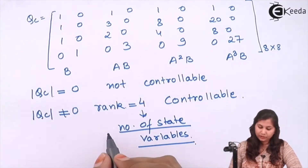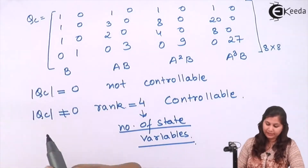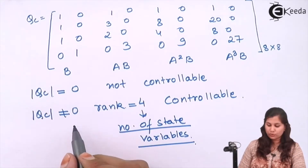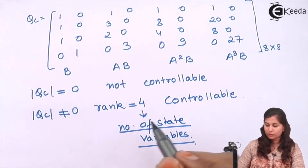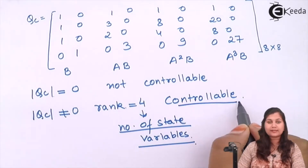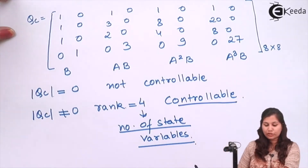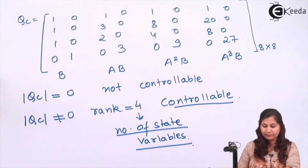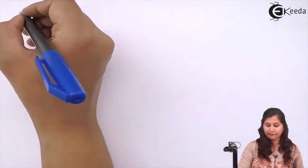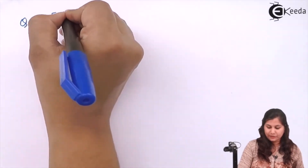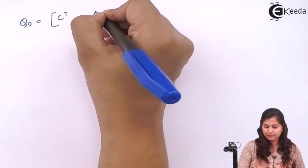Here the determinant is coming out to be not equal to zero, so the system is controllable. Now to check observability, we form the observability matrix Q0.